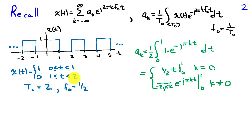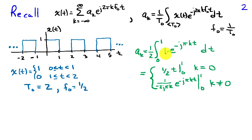We can use this expression to find the Fourier series coefficients. We have one half out front and we'll only integrate from 0 to 1. We should integrate from 0 to 2, but the region from 1 to 2 is exactly 0. So we integrate from 0 to 1 of 1 times e to the minus j pi kt, having substituted f-naught equals one half, which cancels the 2 in front of pi, leaving minus pi kt.